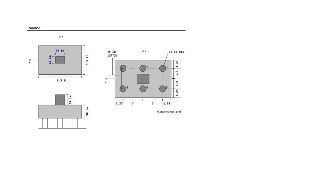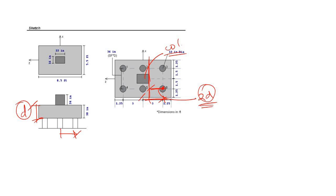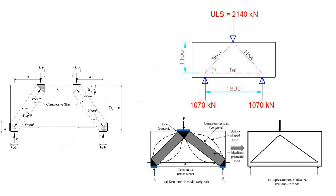However, if the reaction point is only about 2d away from the face of the column — where d is the depth of the pile cap — then we can use the strut-and-tie method. From that point, the load will be transferred to the pile in the form of axial force.